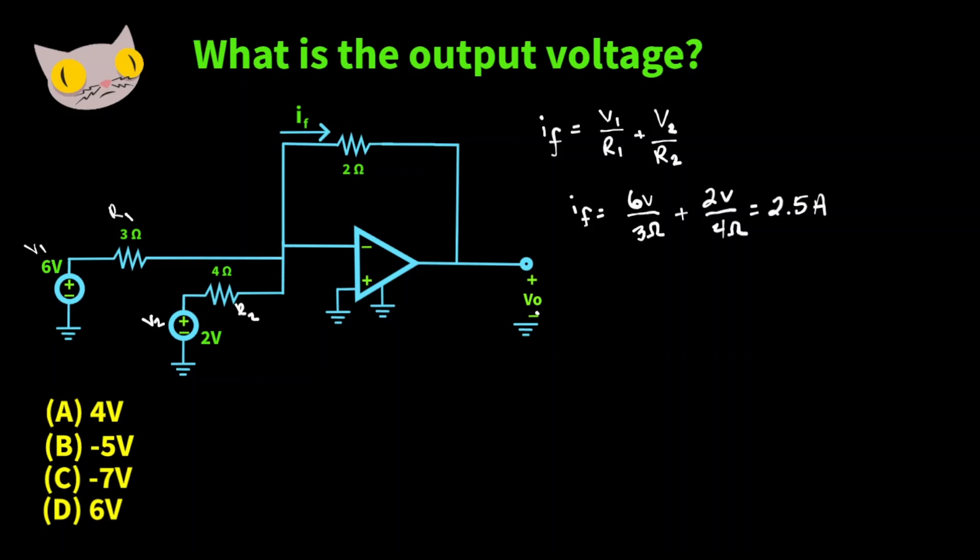Now to find VO we're going to want to use Ohm's law which we know states that voltage is equal to current times resistance. So our output voltage is going to equal IF times R3.